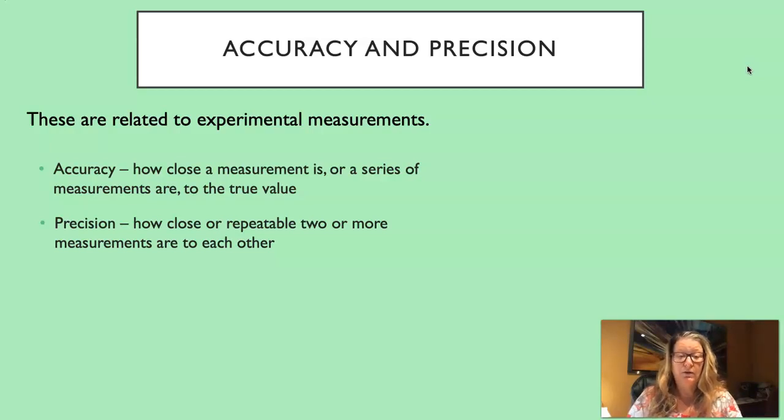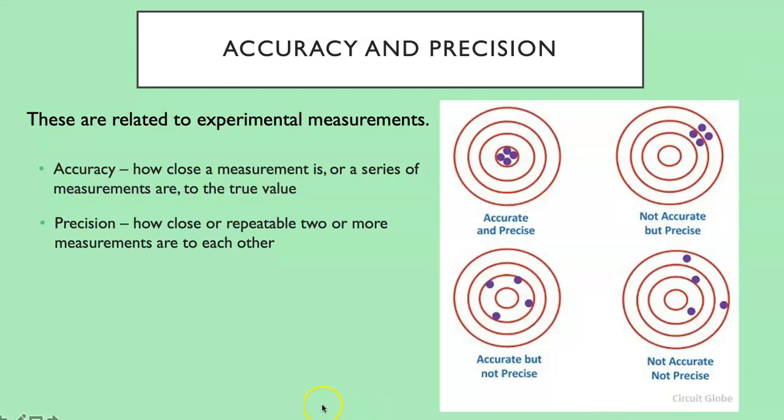One way to picture accuracy and precision is to think about dartboards. So here we have four dartboards. In the upper left we have an example of four darts that are both accurate and precise. The bullseye is where the true measurement is supposed to be, the true value. And here we have those darts hitting the bullseye so they're accurate, and they're all pretty much hitting the bullseye so they're precise.